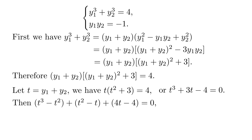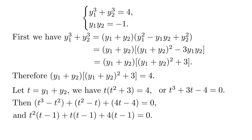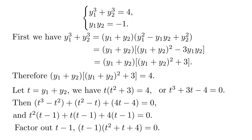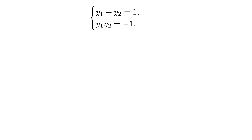Proceeding with long division: t³ + 3t − 4 factors as (t − 1)(t² + t + 4) = 0. The factor t² + t + 4 = 0 has no real solutions. So the only real root is t = 1. Since t = y₁ + y₂, we have y₁ + y₂ = 1.